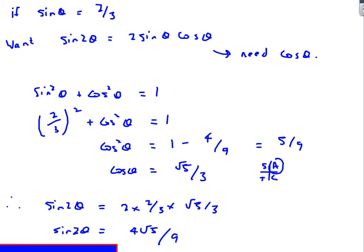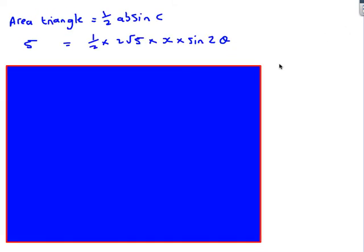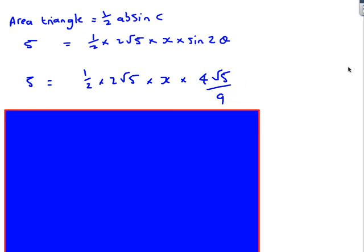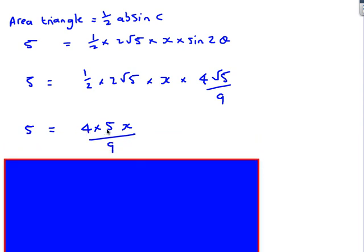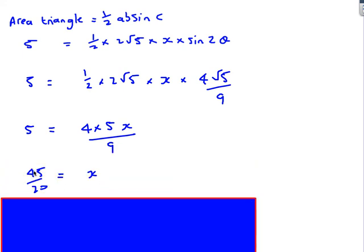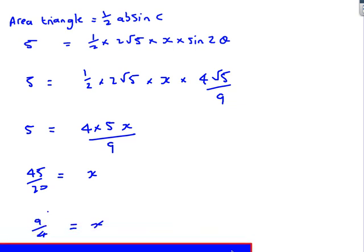Now substituting sin 2θ = 4√5/9 back into the area equation: 5 = ½ × 2√5 × x × (4√5/9). Simplifying: 2 × ½ = 1, and √5 × √5 = 5, giving 5 = 4×5×x/9 = 20x/9. Rearranging: x = 45/20 = 9/4. That's the slightly more difficult double-angle formula question.